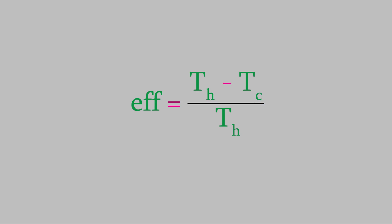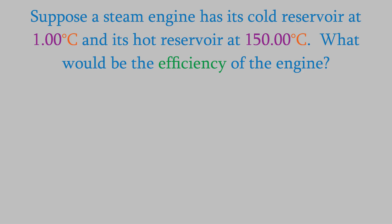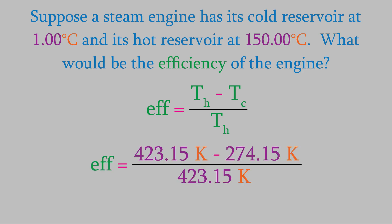For example, suppose we build a steam engine in which the cold reservoir is just 1.00 degrees Celsius, and the steam in the hot reservoir is at 150.00 Celsius. What would be the efficiency of this engine? We'll use this equation — remember to convert all the temperatures to Kelvin. When we do, we find that the efficiency of the engine is 0.355, or 35.5%.